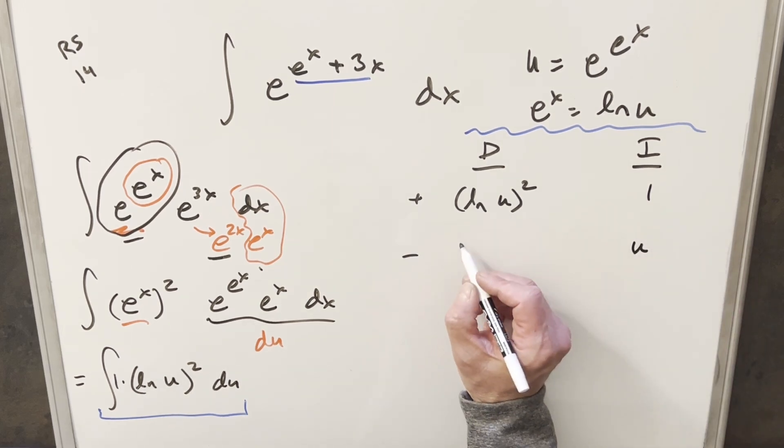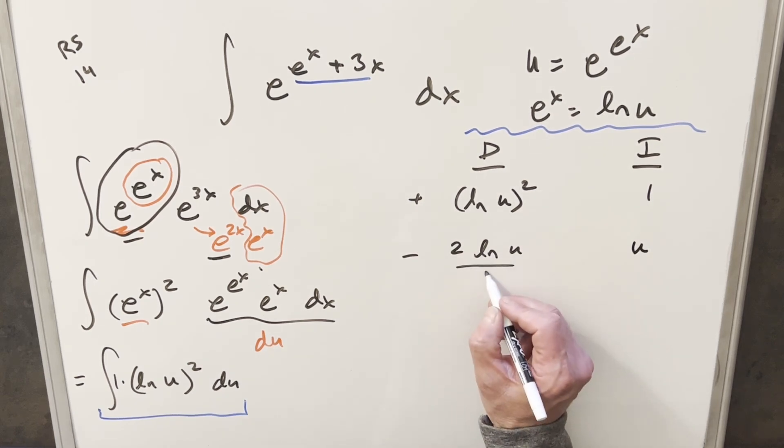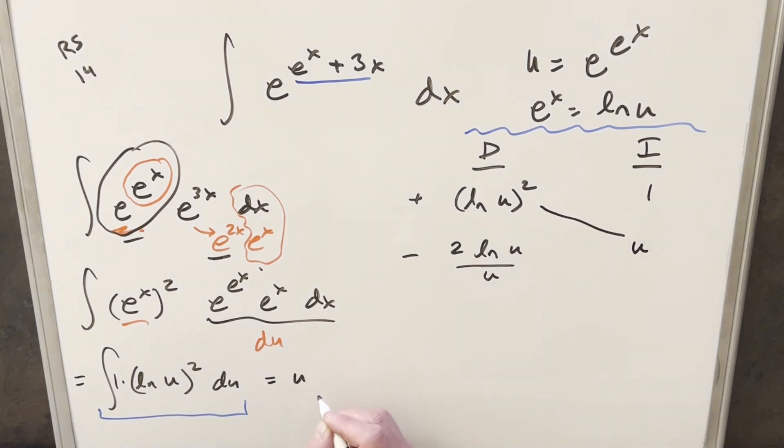Then differentiating here. First, we're going to use power rule. We get 2 ln u. And then with the chain rule derivative, ln u is going to give me just 1 over u. Then we'll have part of our solution right here on the diagonal. So this is going to become u ln u all squared.